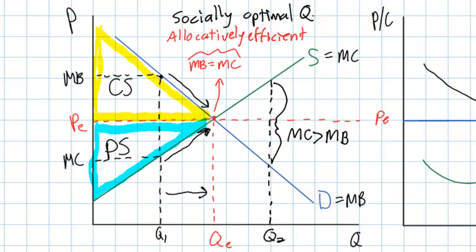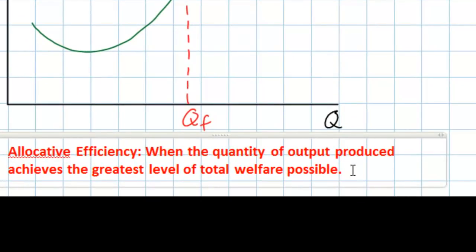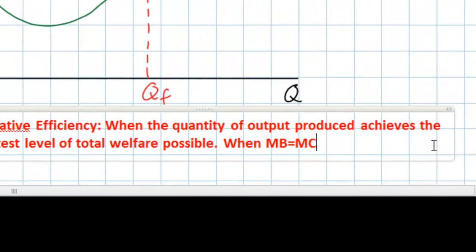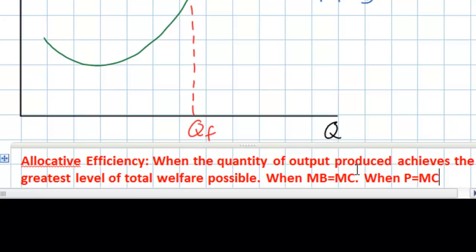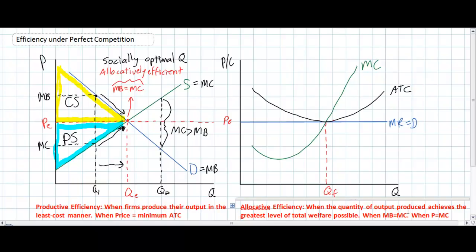Where marginal benefit equals marginal cost, society has achieved an allocatively efficient or socially optimal level of output. Anything less means resources are under-allocated; anything more means over-allocation. Allocative efficiency is achieved when marginal benefit equals marginal cost. In an individual firm diagram there is no marginal benefit curve, but there is a demand curve, and demand represents marginal benefit. We can determine whether allocative efficiency is achieved by looking at whether price equals marginal cost — when P equals MC, a firm is allocatively efficient.